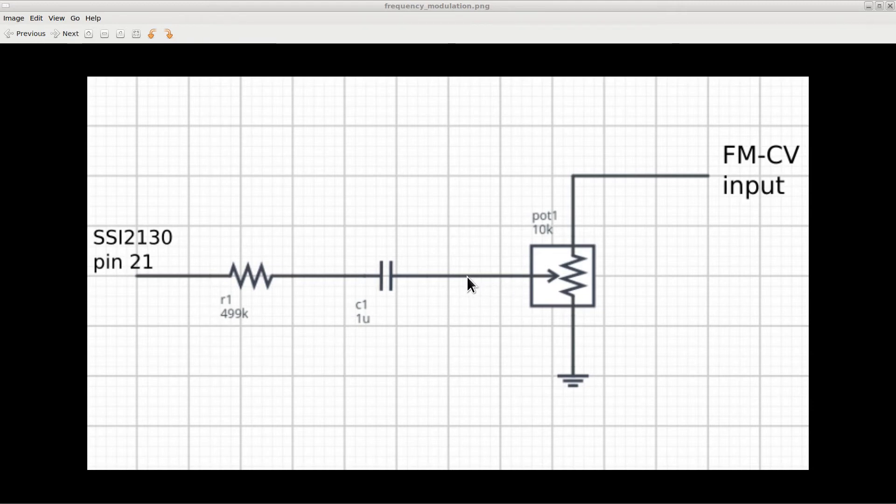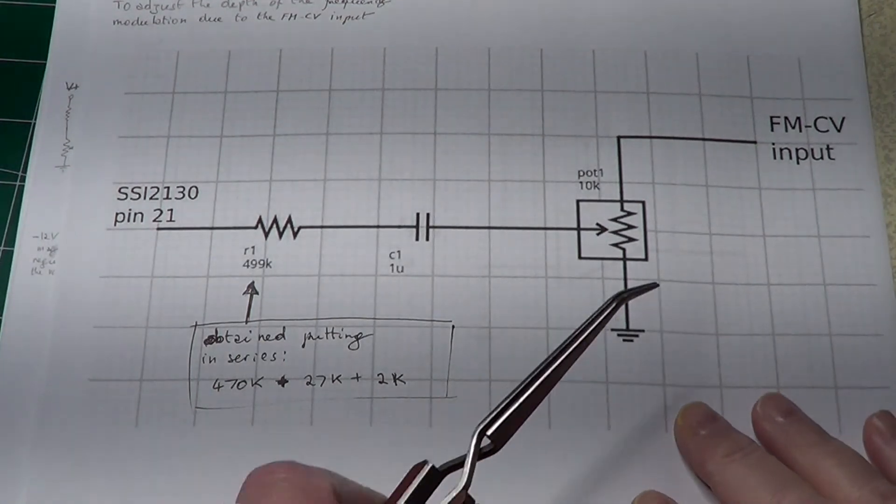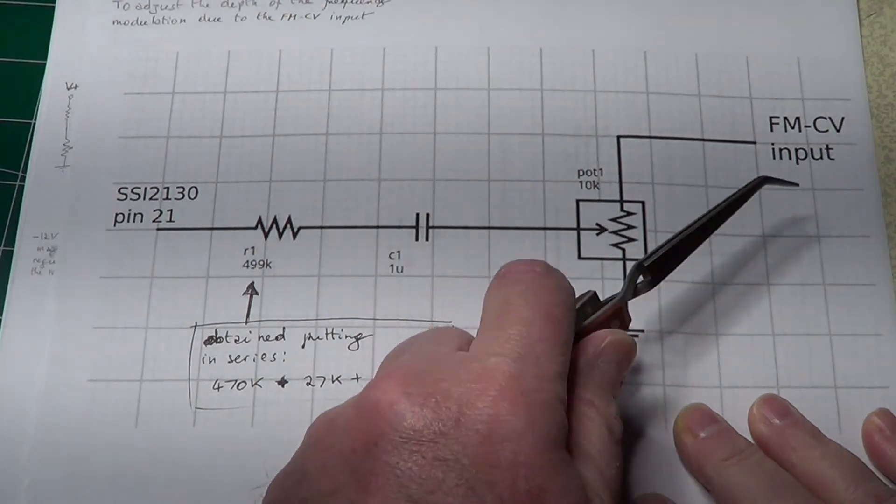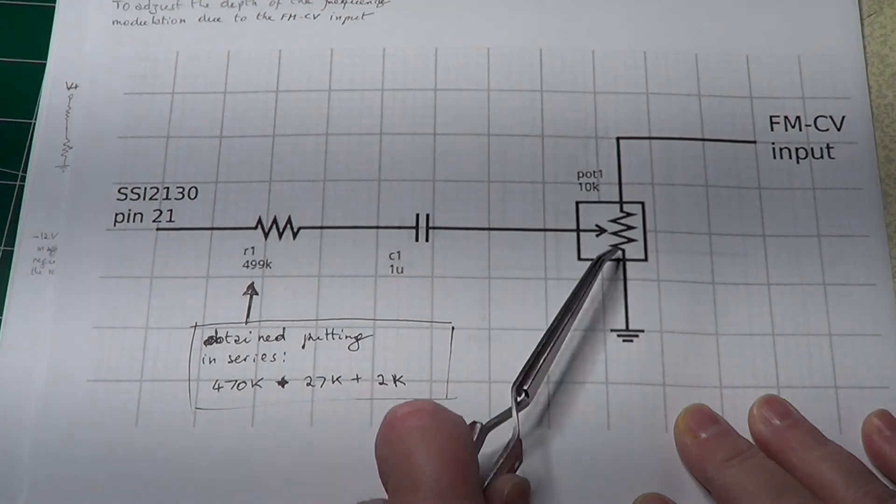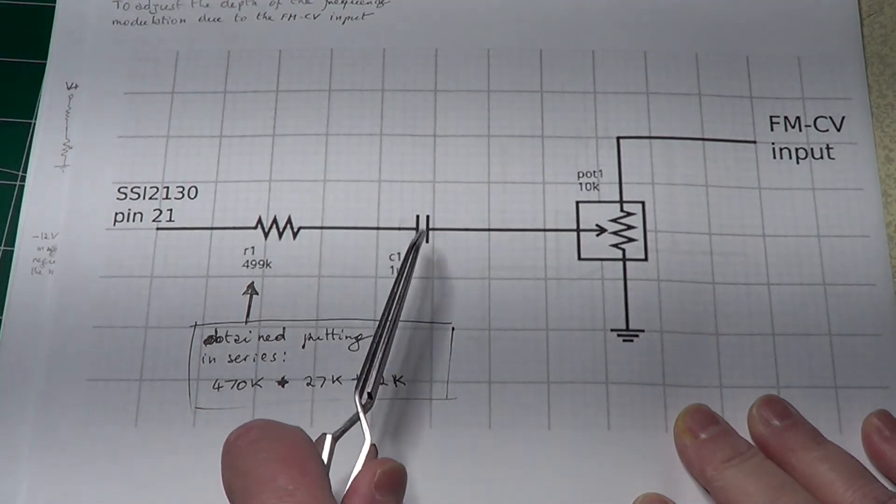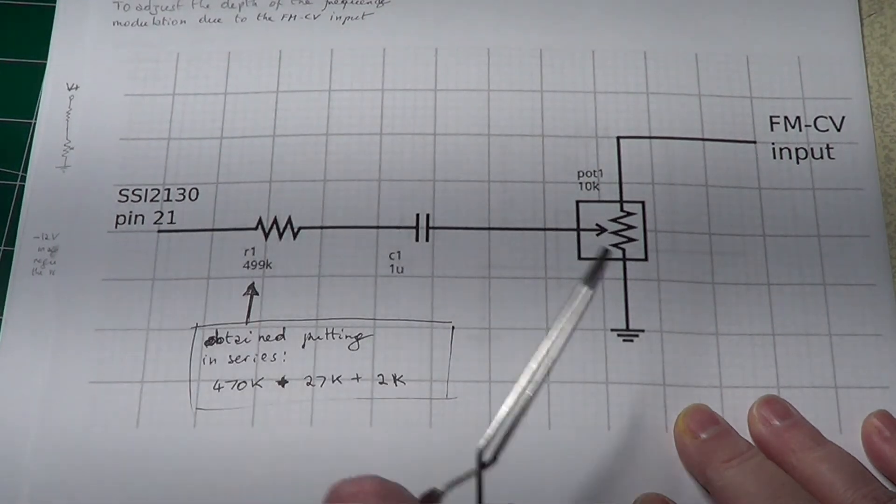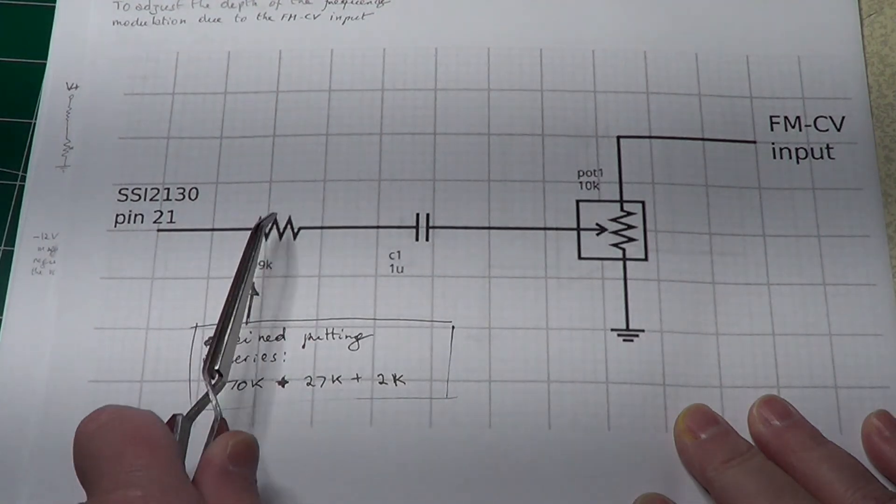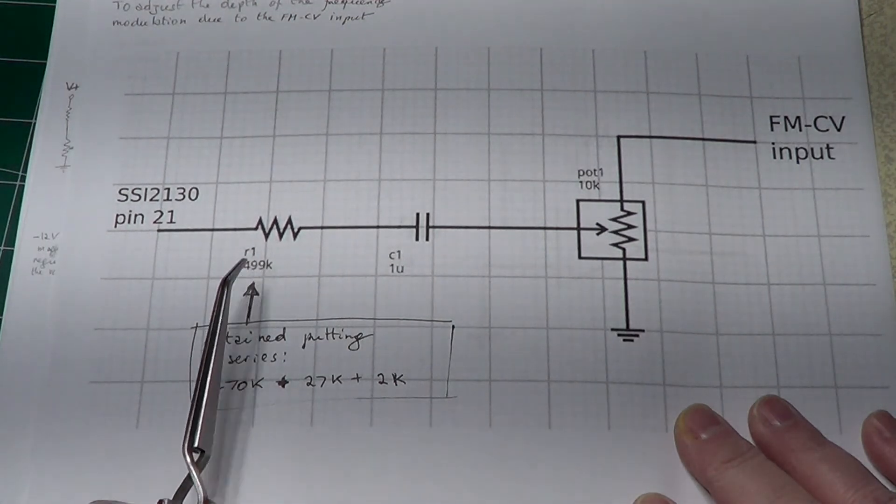The potentiometer here helps in adjusting the depth of the modulation by adjusting the level of the signal to the appropriate level for the effect we want to obtain. Here is again a printout of the circuit. The circuit works by applying to this point a variable control voltage, possibly from an LFO, and the amount of signal that goes through can be adjusted with this potentiometer. Then there is a capacitor to decouple the DC from pin 21, because we only want to create a frequency modulation and not change the frequency with constant values. Finally, there is a 499k resistor to convert the control voltage to a current that can pilot the VCO.